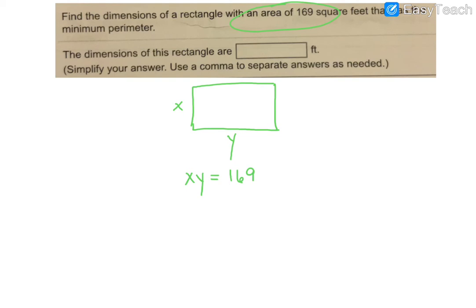I also know that they're asking me to minimize the perimeter. So if I write an equation that focuses on perimeter, perimeter is the distance around. You're going to have two sides that have the width of X, plus you're going to have two sides that have the length of Y. So that would be your perimeter equation.